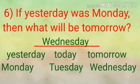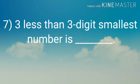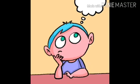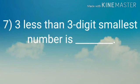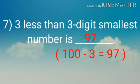Number 7. 3 less than the 3-digit smallest number is — think and tell me the answer. The 3-digit smallest number is 100. Less than means minus 3, so we get the answer 97.